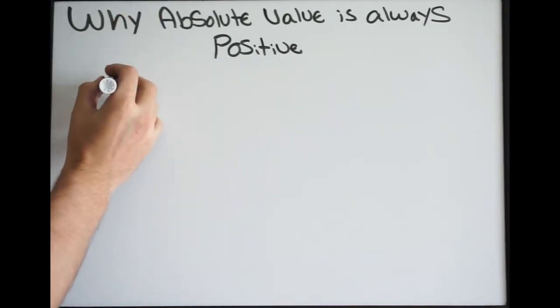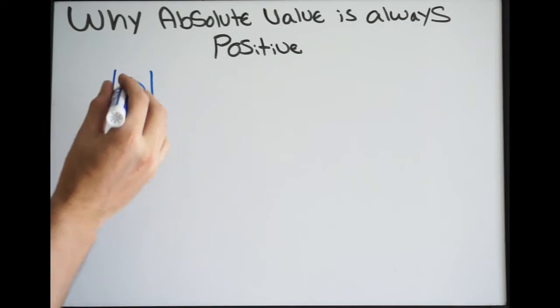For example, if I have the absolute value of 10, what this is telling me is it wants to know the distance 10 is from 0, or the origin.